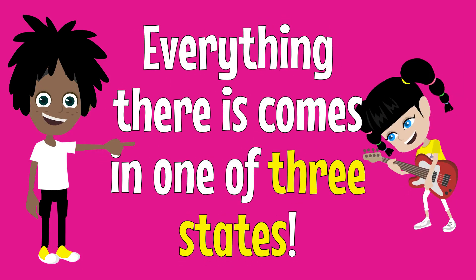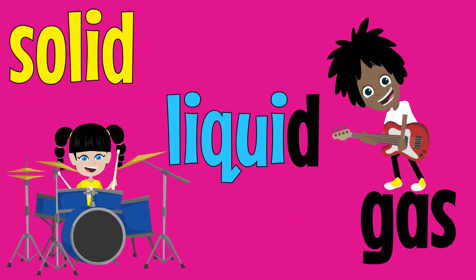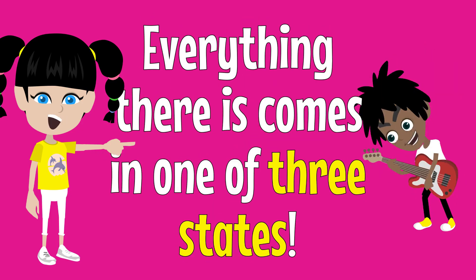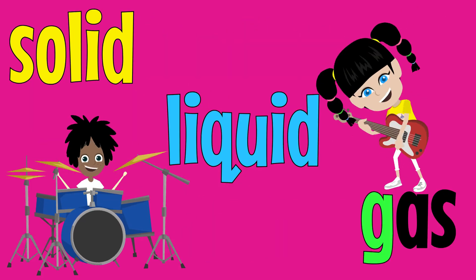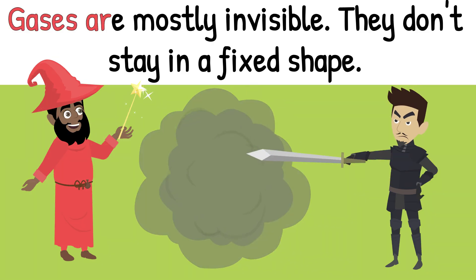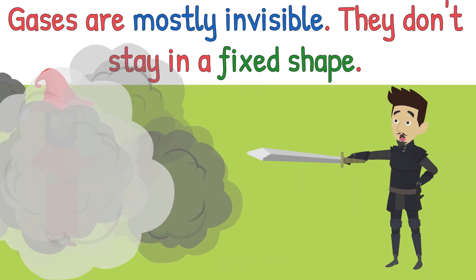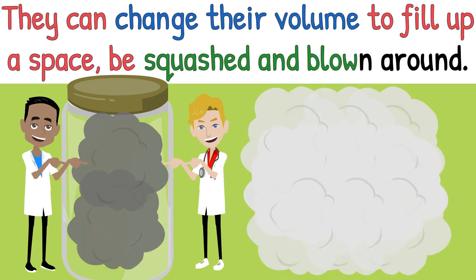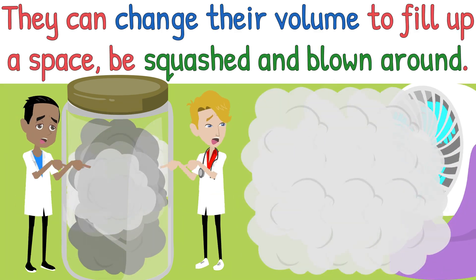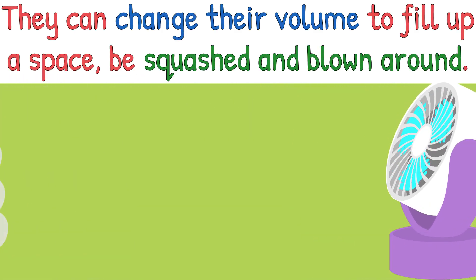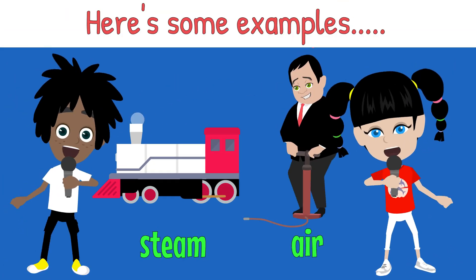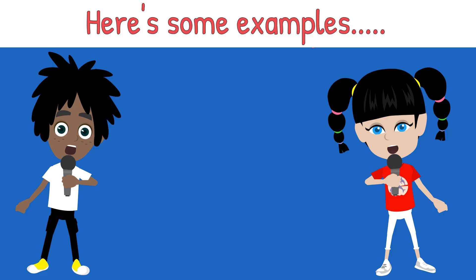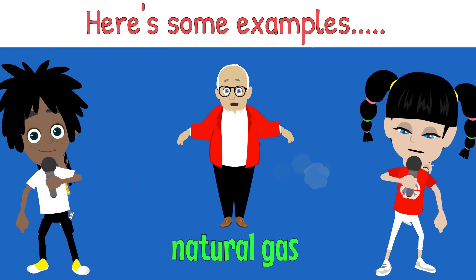Everything there is comes in one of three states — solid, liquid or gas. Gases are mostly invisible. They don't stay fixed in a shape. They can change their volume to fill up a space, be squashed and blown around. Here's some examples: steam is gas, air is gas, oxygen is gas, helium is gas, and don't forget there's natural gas.